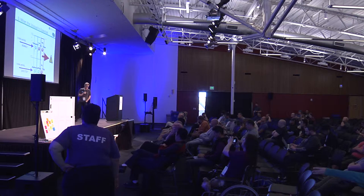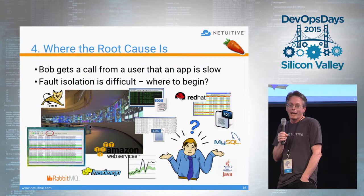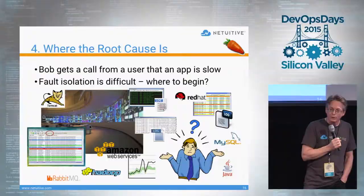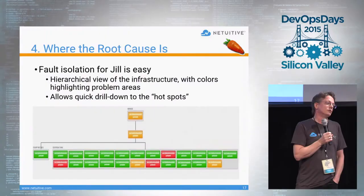One day Bob gets a call from a user that their application is slow, and Bob doesn't even know where to begin looking. He has a wall full of performance graphs and charts, and all kinds of log files to sort through, from app servers to database servers. Jill, on the other hand, is able to see a hierarchical view of each application's infrastructure. She can very quickly drill down to where the hotspots are, knows where to focus her attention, and can proactively fix problems before users call in to complain.